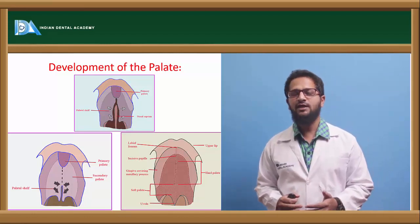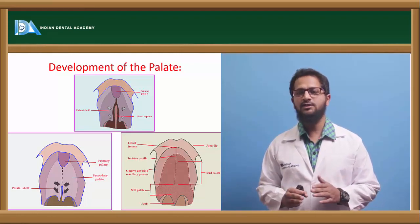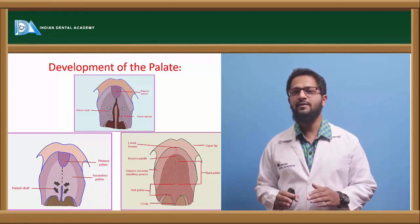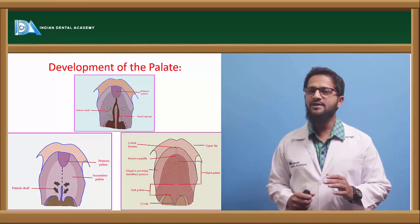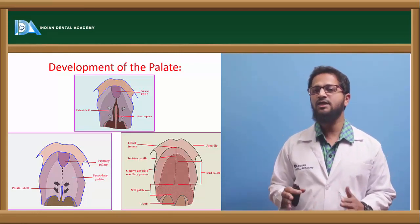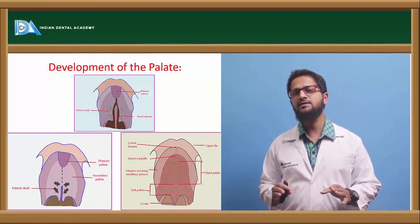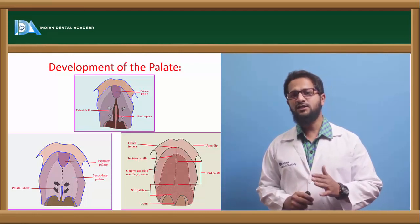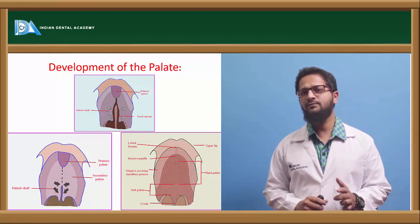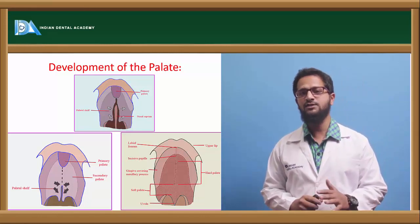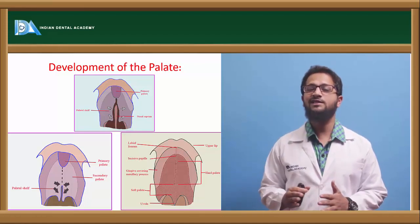The palatal shelves produced by the maxillary process start growing medially towards each other, but their growth is prevented by the presence of the tongue, causing them to grow in a vertically downward direction. At around seven and a half weeks of intrauterine life, there is a sudden change in the growth of these palatal shelves — instead of growing vertically downward, they again start to grow medially towards each other. This sudden transformation actually occurs within a few hours.